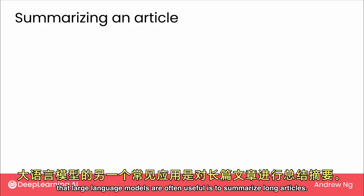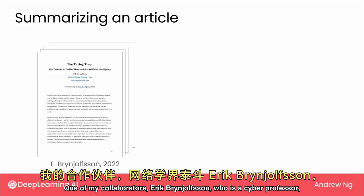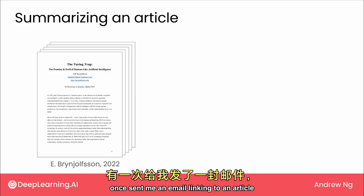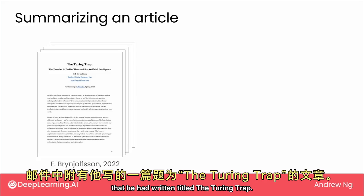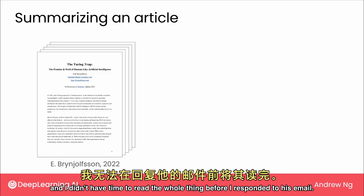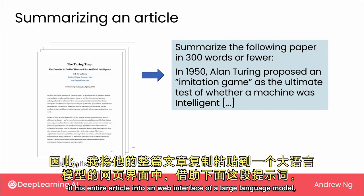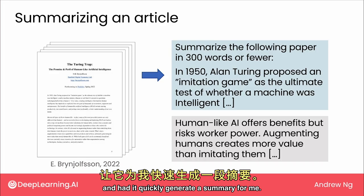A second reading task that large language models are often used for is summarizing long articles. One of my collaborators, Erik Brynjolfsson, who's a cyber professor, once sent me an email linking to an article he had written titled 'The Turing Trap.' I knew it was a good article, but it was very long and I didn't have time to read the whole thing before responding to his email. So I used a prompt and copy-pasted his entire article into a web interface of a large language model and had it quickly generate a summary.